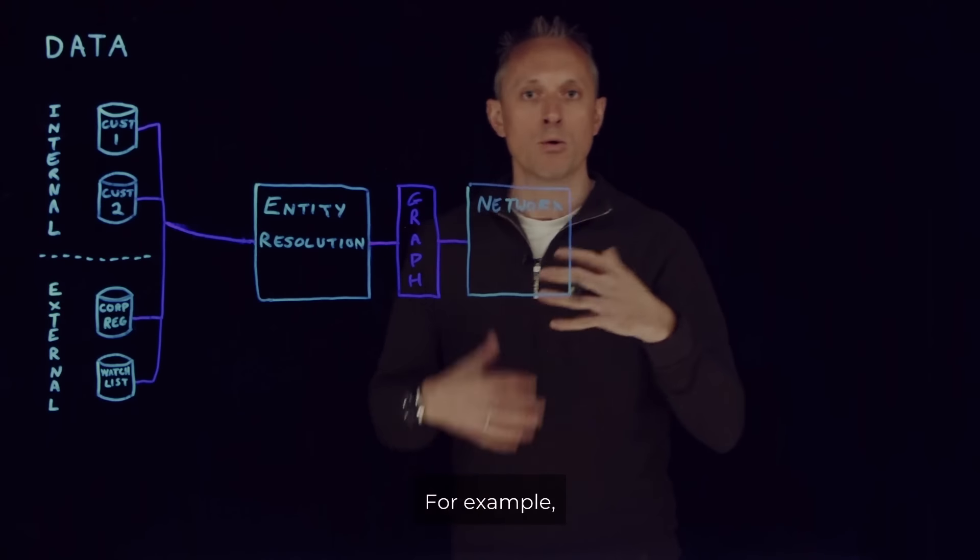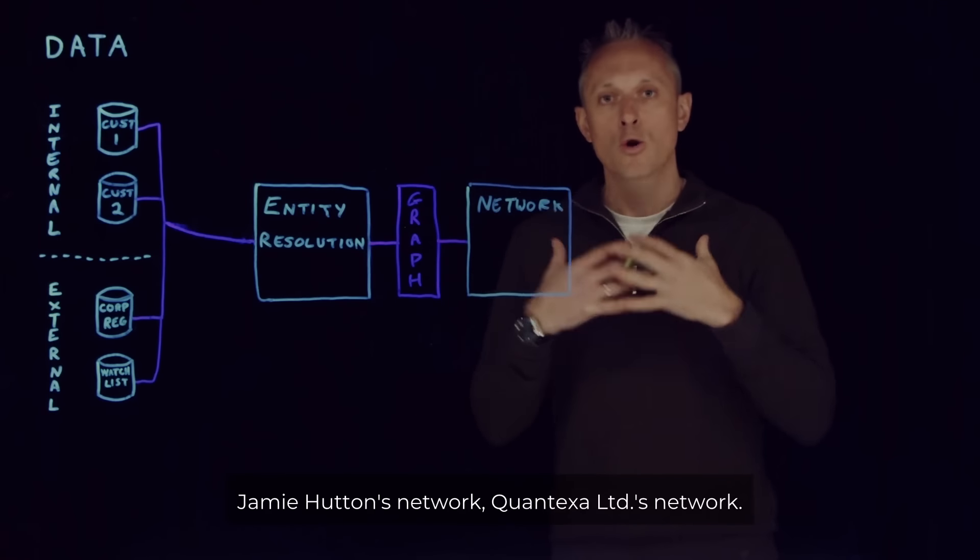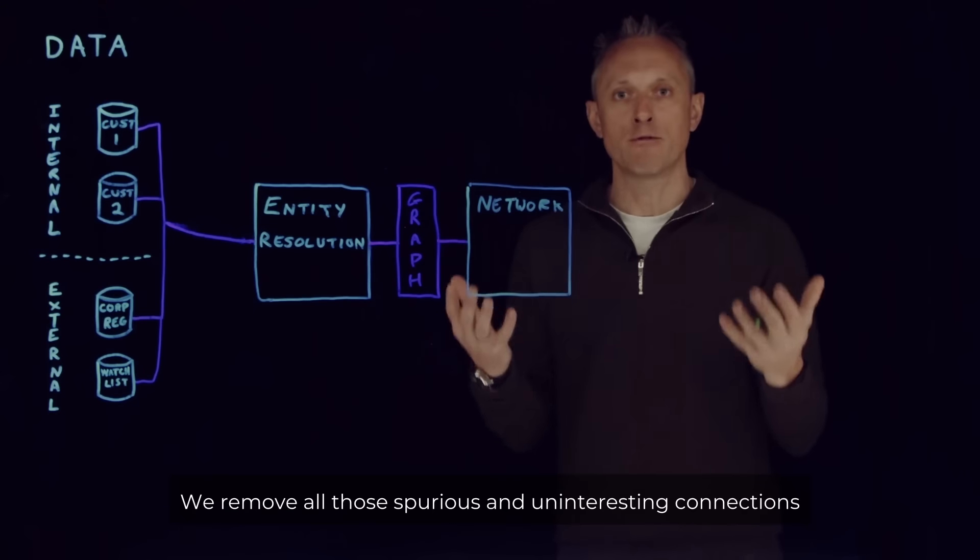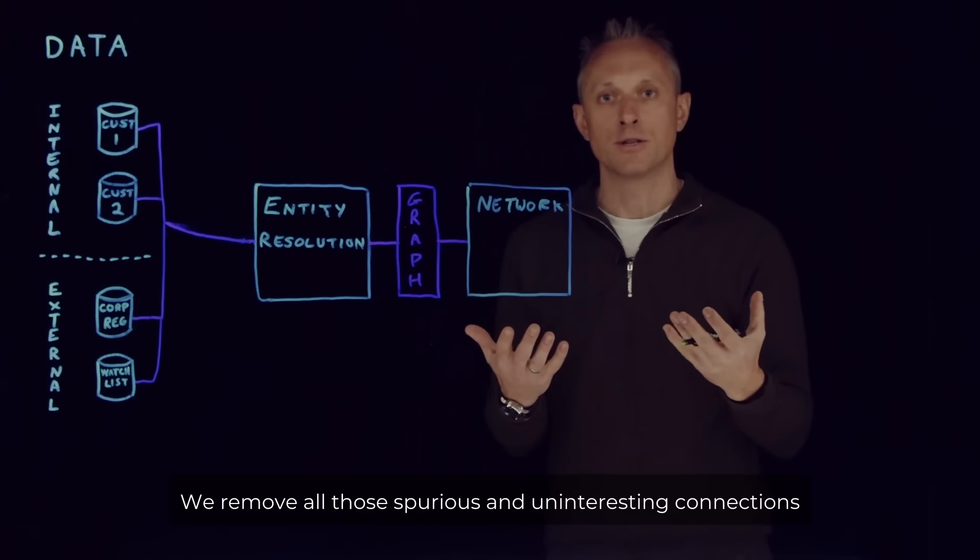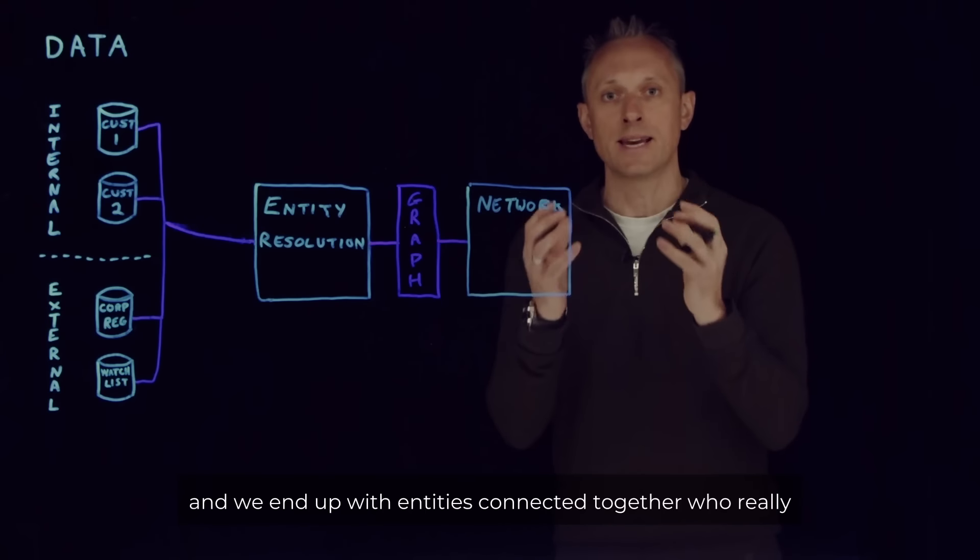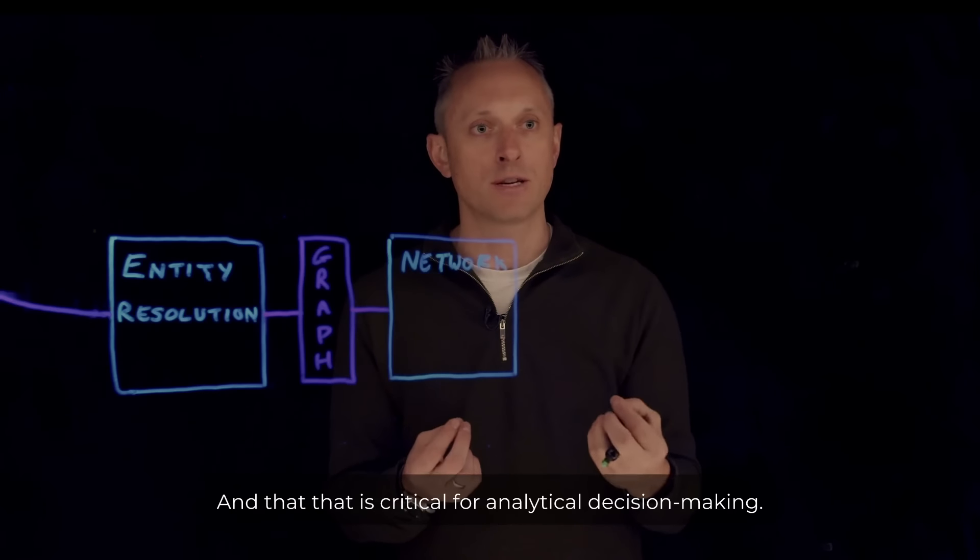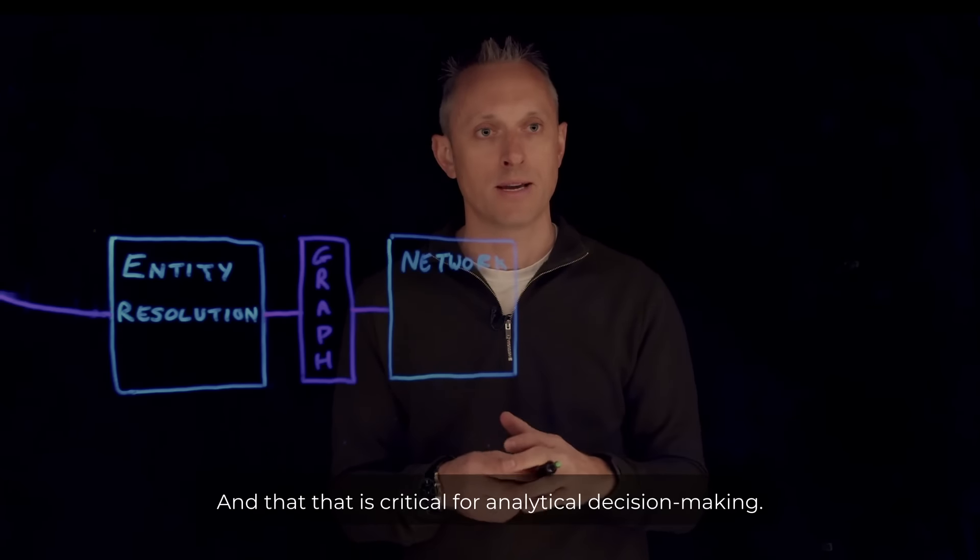For example, Jamie Hutton's network, Quantexa Limited's network. We remove all those spurious and uninteresting connections, and we end up with entities connected together who really do know each other. And that is critical for analytical decision making.